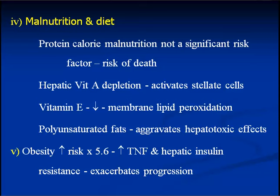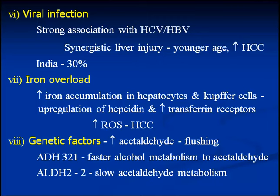Malnourished individuals have vitamin A depletion, and depletion of vitamin A within the hepatocytes activates the stellate cells, which is important for the formation of fibrosis. With decreased vitamin E because of malnutrition, there is increased membrane lipid peroxidation, which again is an important reason in the pathogenesis of liver disease. Co-infections with hepatitis C and hepatitis B are more common in alcoholics because of their high-risk behavior, and whenever these hepatotropic viruses are combined with the insult from alcohol to the liver, it produces synergistic liver injury.